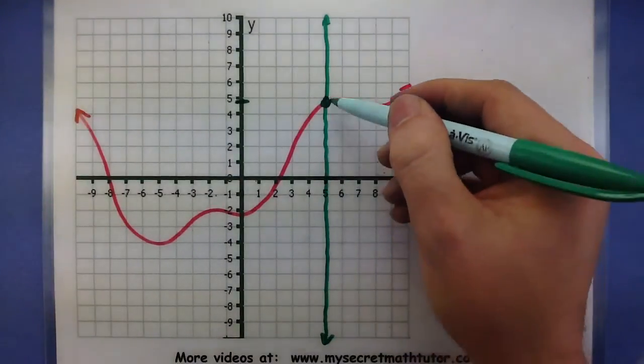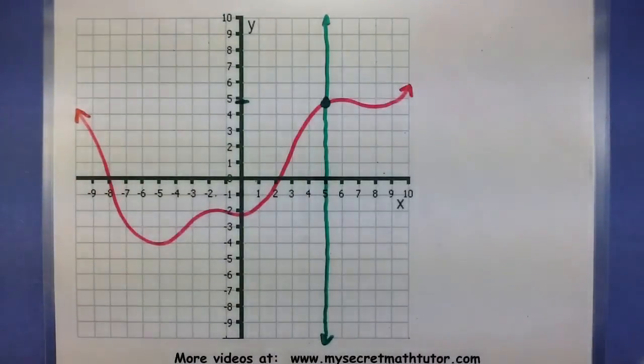That for every first component I give it, it will only go to one second component. So you can see why no matter where I put that vertical line, it's basically testing all of the components.